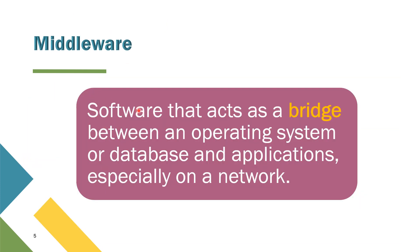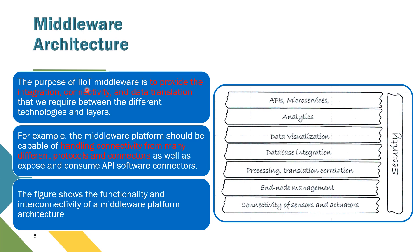So what is middleware? Middleware is a software that acts as a bridge between the operating system or database and application, especially on a network. The purpose of IoT middleware is to provide the integration, connectivity, and data translation required between the different technologies and layers, because each system might use more than just one protocol and more than just one software. That's why we need the middleware to translate and integrate all of this into one readable and functional system. For example, the middleware platform should be capable of handling connectivity from many different protocols and connectors, as well as exposing and consuming API software connectors.